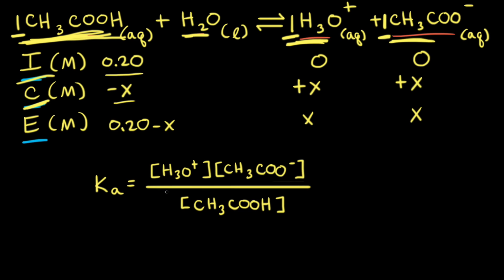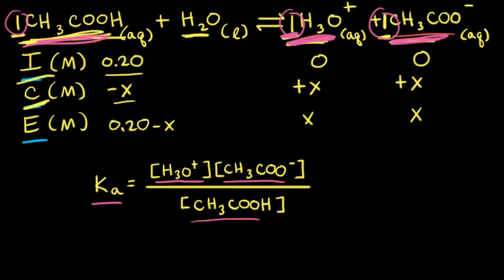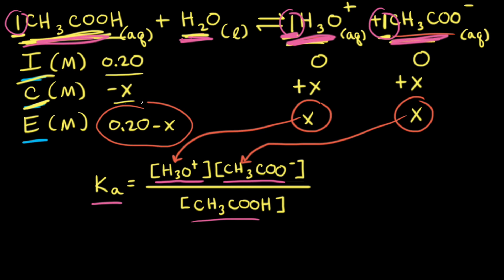Next, we write out the equilibrium constant expression from the balanced equation. The Ka is equal to the concentration of hydronium ion raised to the first power, times the concentration of the acetate anion raised to the first power, divided by the concentration of acetic acid raised to the first power. Water is left out of our equilibrium constant expression. We then plug in the equilibrium concentrations from our ICE table: X for hydronium, X for acetate, and 0.20 minus X for acetic acid.